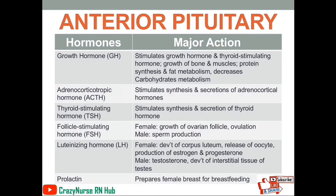We also have your anterior pituitary gland. Under which we have growth hormone, which is responsible for the growth of bone and muscles, protein synthesis, fat metabolism, and it also decreases carbohydrate metabolism. Next, we have your adrenocorticotropic hormone, which stimulates synthesis and secretion of adrenocortical hormones. We also have thyroid-stimulating hormone, which stimulates synthesis and secretion of thyroid hormone. We also have follicle-stimulating hormone. In females, it is responsible for the growth of ovarian follicles and ovulation. In males, it is responsible for sperm production.